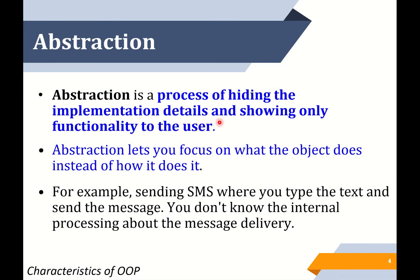First, abstraction. What is abstraction? Abstraction is a process of hiding the implementation details and showing only functionality to the user. Abstraction lets you focus on what the object does instead of how it does it. For an example, sending SMS where you type the text and send the message to other people.